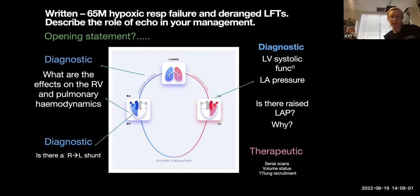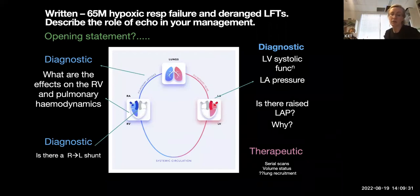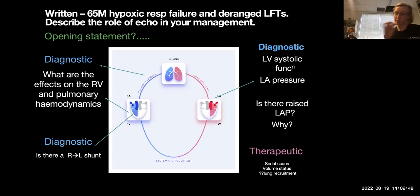I would then divide the answer into the diagnostic role — in the context of hypoxic respiratory failure with bilateral infiltrates — as well as potentially a therapeutic role. In terms of the diagnostic role of echo, it can be divided into thinking about the left side of the heart and then the right side of the heart and the pulmonary circulation. Starting with the diagnostic role: establishing whether there's raised left atrial pressure or not.